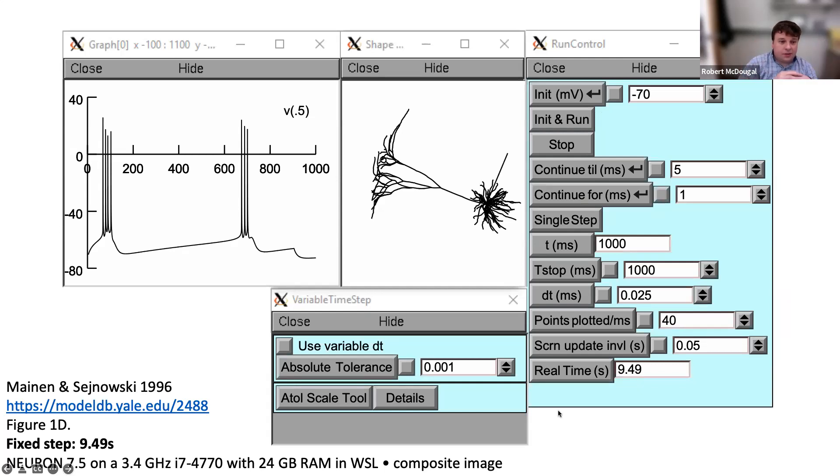Once I have all of this and I've picked it, I can see the effect. I can run my model using fixed step integration. Here it is—I ran this model with fixed step integration, dt is 1/40th millisecond, NEURON's default, and the whole thing runs in 9.49 seconds.